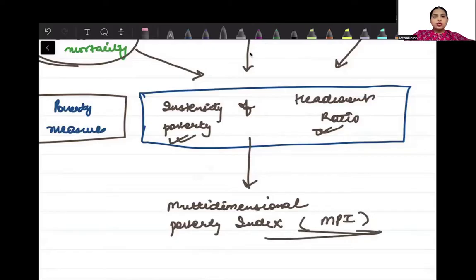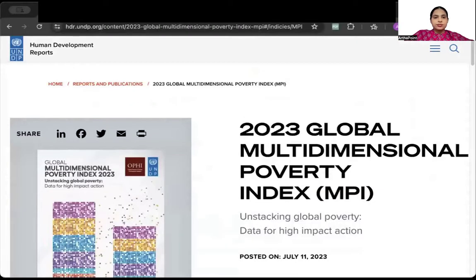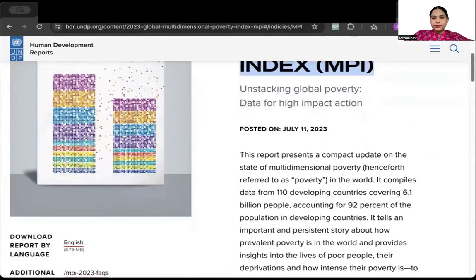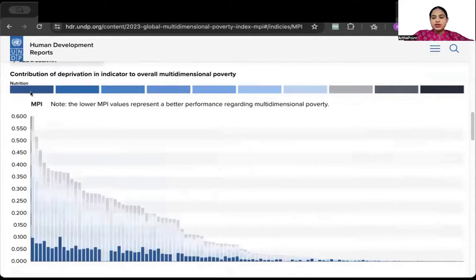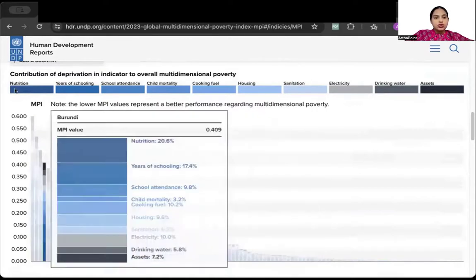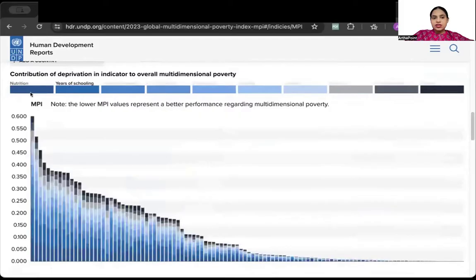Now let me just go ahead and show you through the UNDP website. This is the UNDP website and this is 2023 global multidimensional poverty index. If you notice here, first is your health as a dimension, and under health as dimension, our two indicators are nutrition and child mortality. So you see this, this is nutrition.